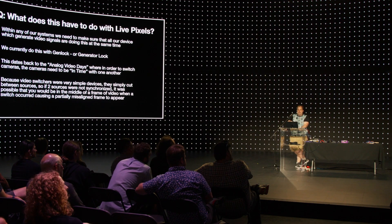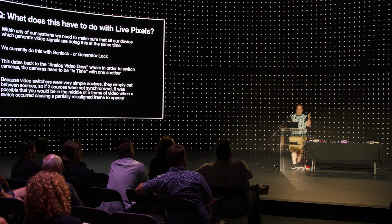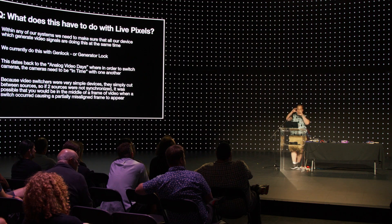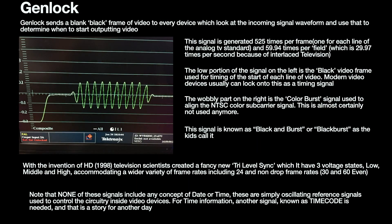Back in the day there was no memory in video switchers. Frames came in from multiple sources, and if those frames weren't happening at the same time, when you switched from one source to another you'd get the top part of one and the bottom part of the other — a really ugly glitch. You couldn't frame-synchronize in memory because memory was cataclysmically expensive. They used a signal to tell every device in the studio when to start, called black burst: a blank black frame of video with a wobbly color burst signal for synchronizing color television signals. It's generated 525 times per frame — one for each line of the analog television standard from 1953.